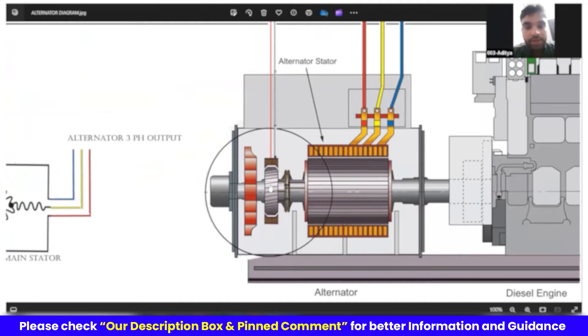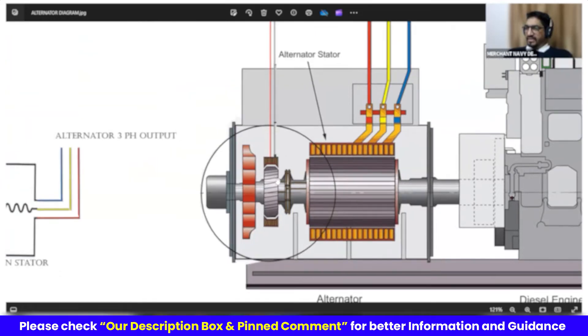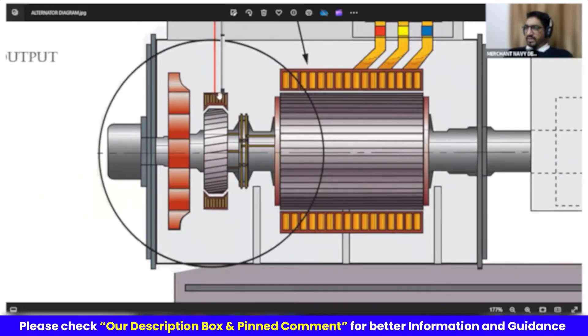Do you see an alternator? This is an exciter. This is the main generator. This is exciter part of the generator. This is exciter stator. This is exciter rotor. This is the main rotor. And this is main stator.